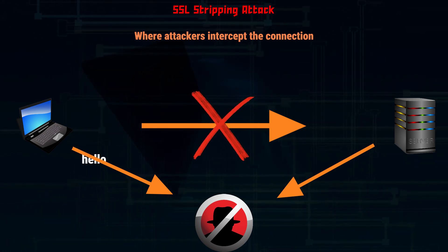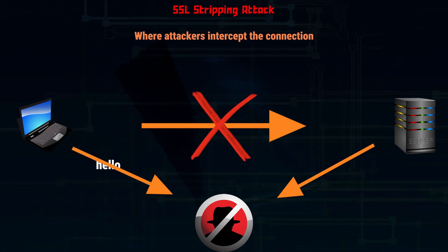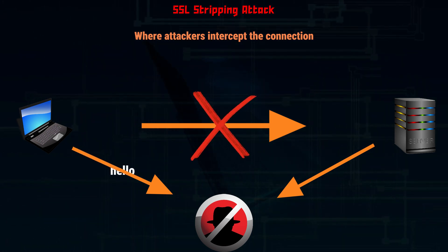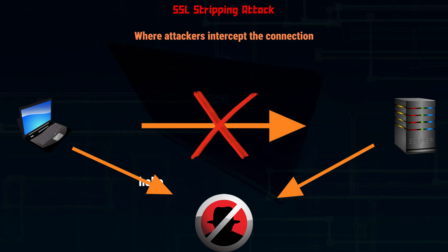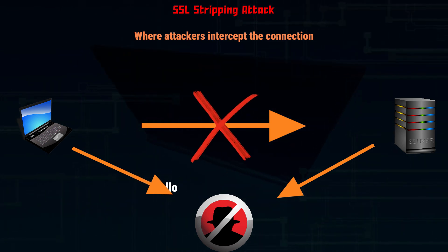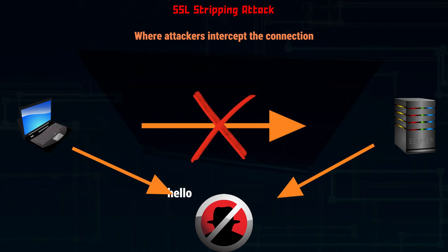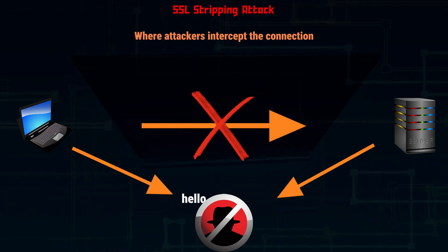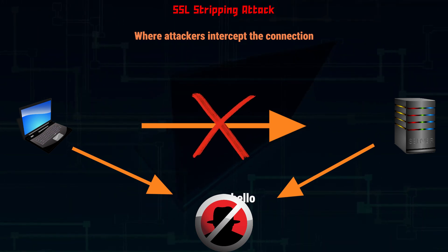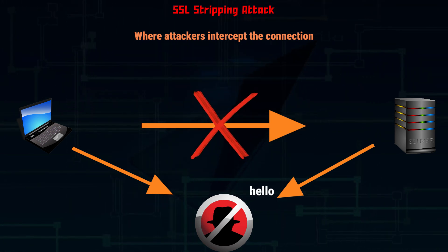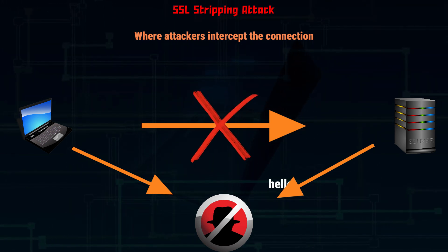The attacker is then able to perform a man-in-the-middle attack. When the server sends a response, the attacker intercepts it and sends it to the user in an unencrypted format, pretending to be the server.